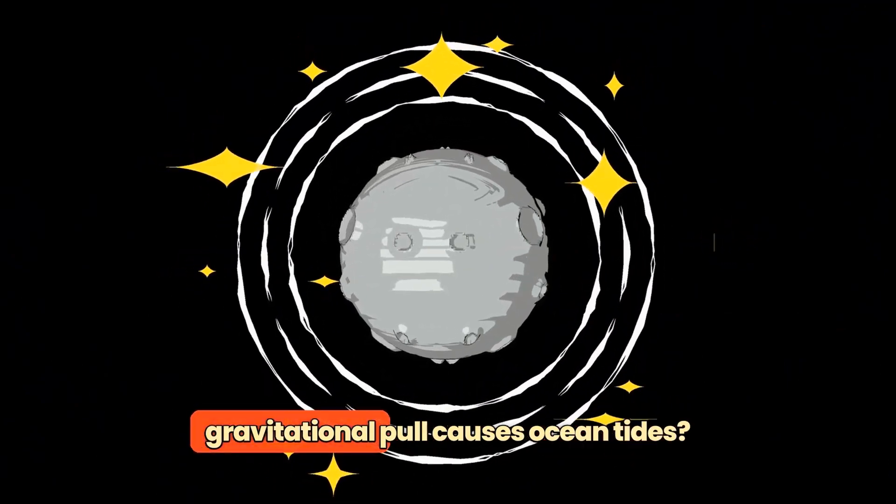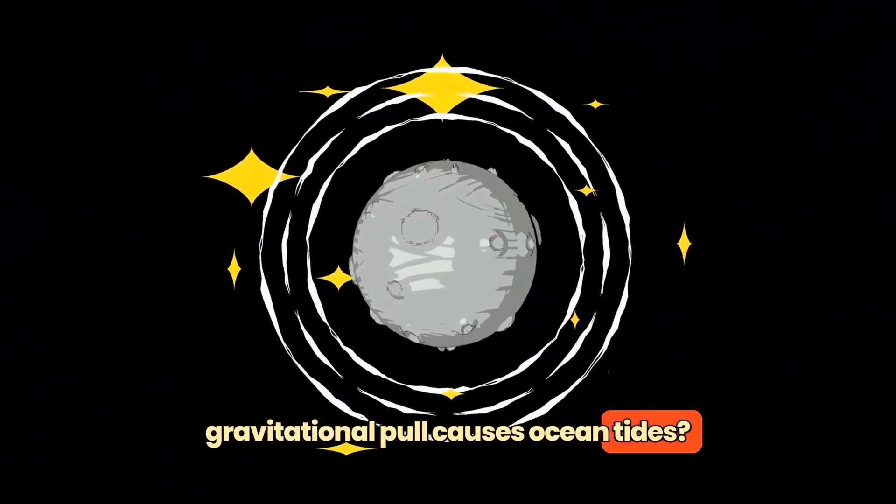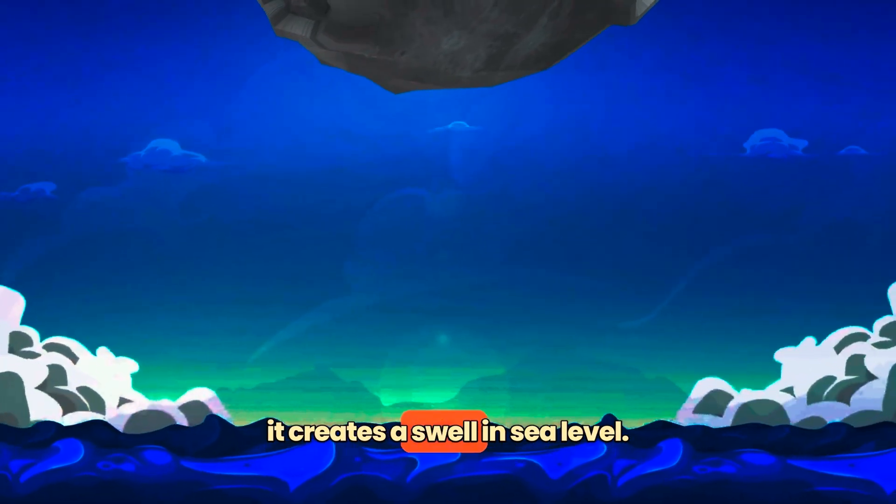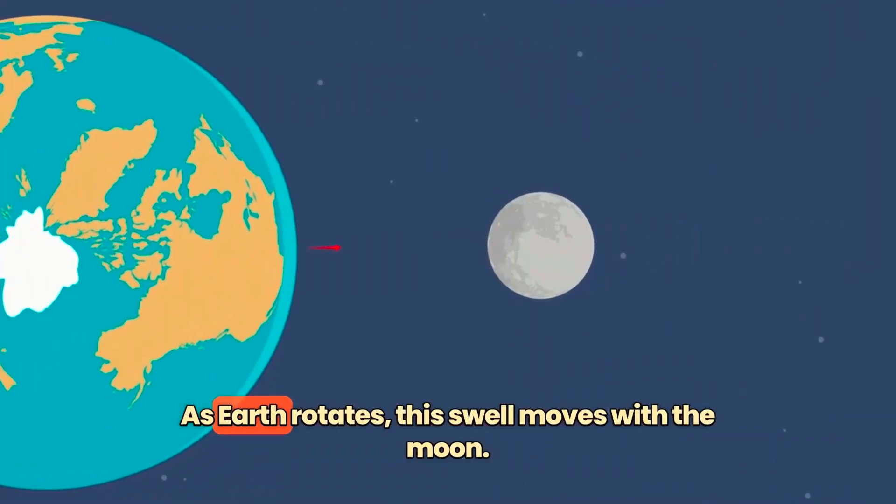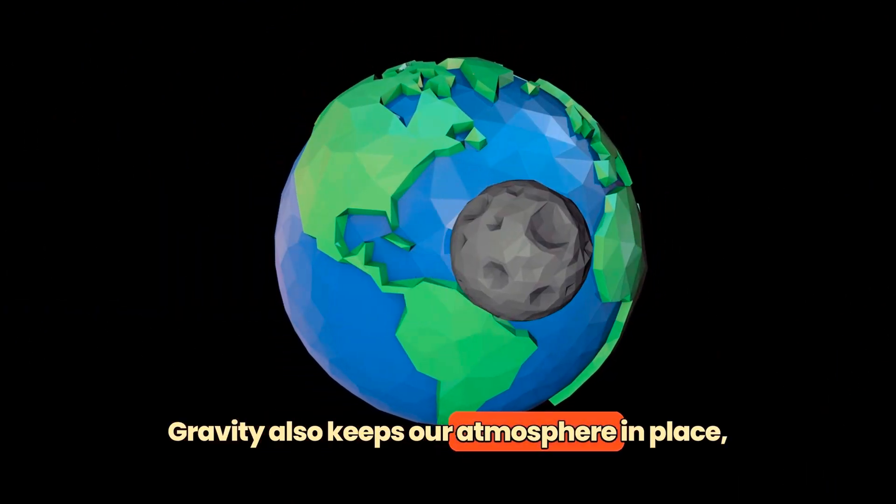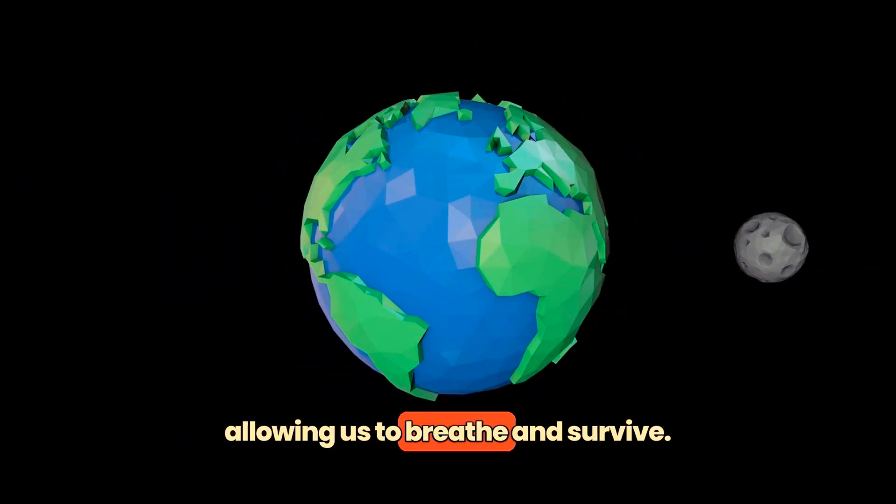Did you know that the moon's gravitational pull causes ocean tides? As the moon passes over the ocean, it creates a swell in sea level. As Earth rotates, this swell moves with the moon. Gravity also keeps our atmosphere in place, allowing us to breathe and survive.